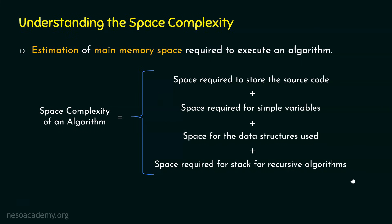We need to add these parameters in order to calculate the space complexity of an algorithm. Out of these, the first two are not so important. The space required to store the source code and the space required for simple variables are constants. Just like time complexity, we do not bother about constants in space complexity — we eliminate them.